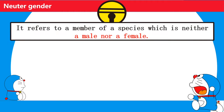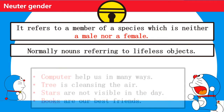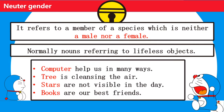Neuter gender refers to a member of species which is neither male nor female — normally nouns referring to lifeless things. Computer helps us in many ways. Trees are cleaning the air. Stars are not visible in the day. Books are our best friends. Here, computer, tree, stars, and books are examples of neuter gender.